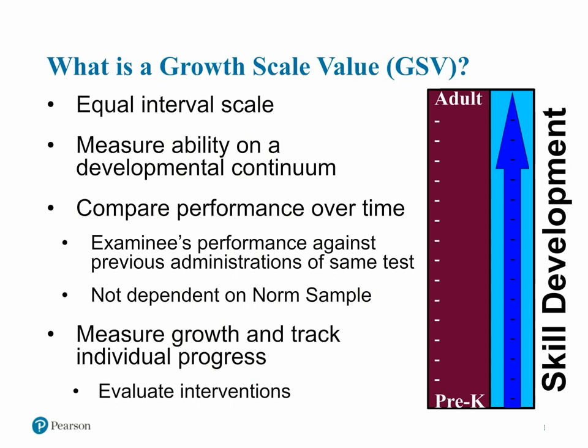GSVs are used to measure growth and track the progress of an individual. This metric is ideal when you need to make comparisons across administrations covering multiple grades and ages. It's also particularly useful for tracking the progress of students who are making progress relative to their own past performance on a test, but when they continue to be delayed in comparison to age and grade-appropriate peers. GSV can also be used to evaluate the efficiency or efficacy of intervention programs by determining how a person has progressed on a particular skill or ability.